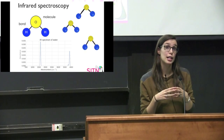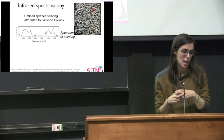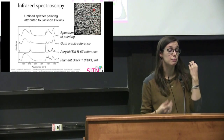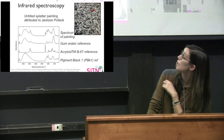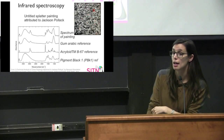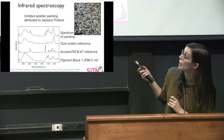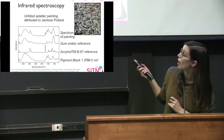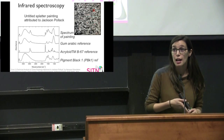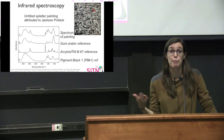Going back to the painting attributed to Jackson Pollock — the way they looked at the binding medium was using infrared spectroscopy. The red square marks where they took the spectrum on the black paint, and they compared it to three references: gum arabic, which is a natural binding medium; Acryloid B-67, which is a man-made acrylic binding medium developed after Jackson Pollock's death; and Pigment Black 1, which Pollock used. When they looked at the spectrum, it appears to be an overlap of gum arabic and Pigment Black 1 — but one particular peak only matches the Acryloid, which they used as an indication that the Acryloid is present in the material and therefore this painting must have been made after 1965.